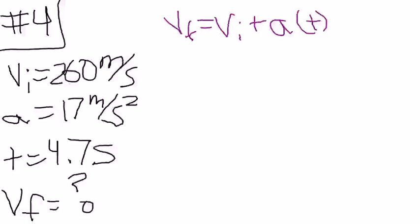Question number four. A plane cruising at 260 meters per second accelerates at 17 meters per second squared for 4.7 seconds. What is its final velocity?